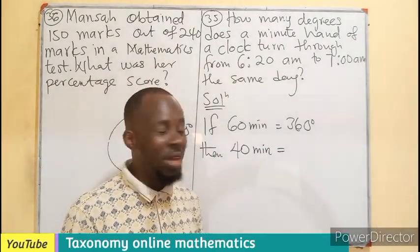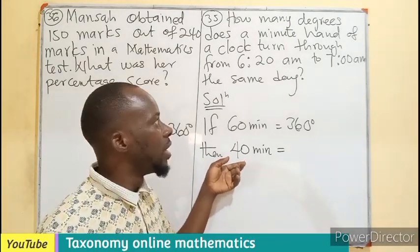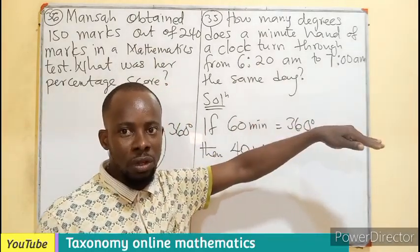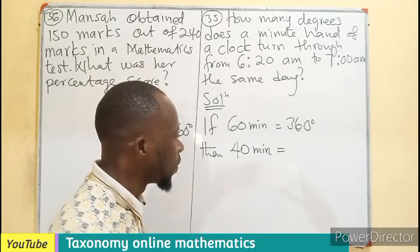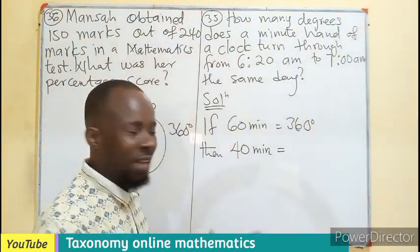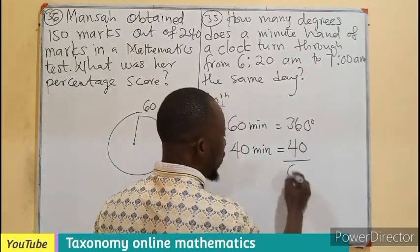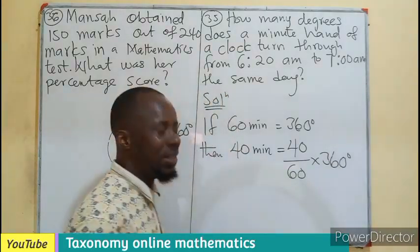Don't forget, if this were to be in section B, you have to also prove how you get the 40 minutes by subtracting 6:20 from 7 o'clock before this ratio begins. If more, divide. If less, more divide. So 40 minutes over 60 minutes times 360 degrees.